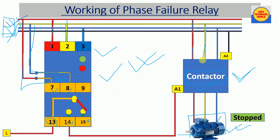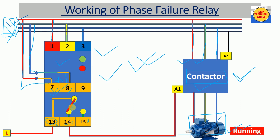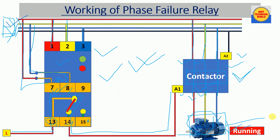When we connect R, Y, B phases and apply 415 V across the bus bar, the relay receives three-phase power and the auxiliary contact also gets its 415 V supply. The three phases are also available at the input terminals of the contactor. Since everything is okay, the relay coil energizes, NO contact becomes NC, and power flows through to the contactor coil. The contactor energizes, completes the circuit, and the motor receives power and runs.